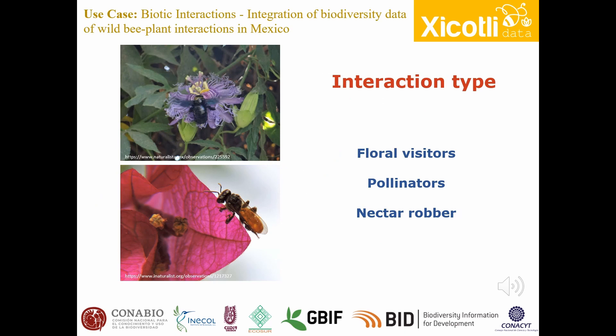We consider it necessary to indicate the type of interactions between the bees and the plant, and we define three types of interactions: floral visitors, pollinators, and nectar rovers. These three categories can be assigned based on observational information associated with the sampling data or based on literature. It is interesting to mention that the most frequent type of interaction integrated into the dataset so far is floral visitors.